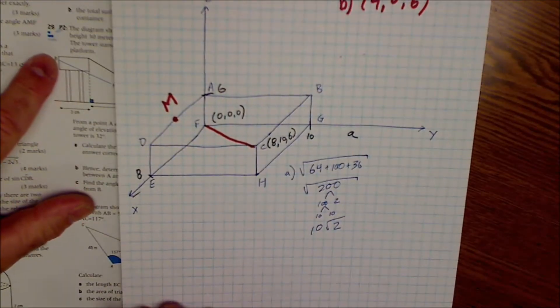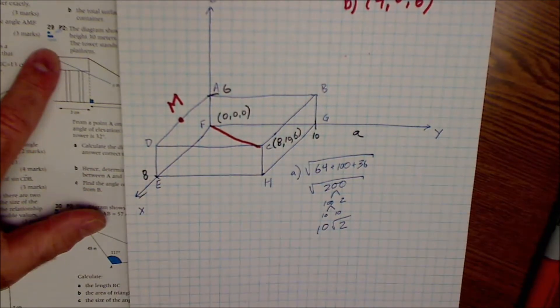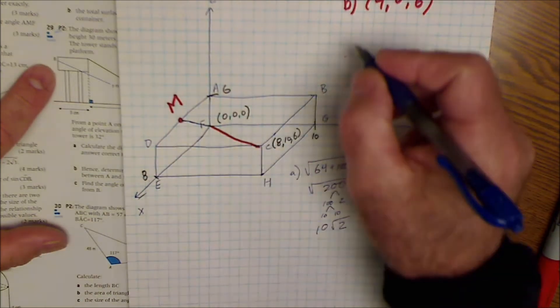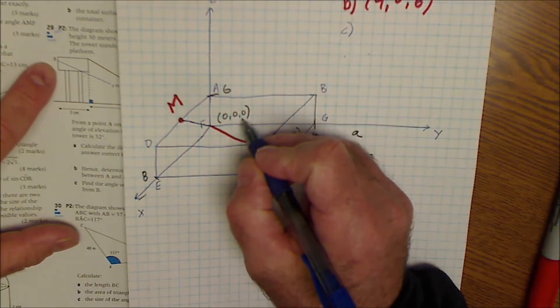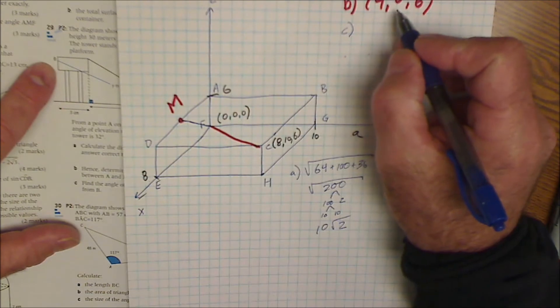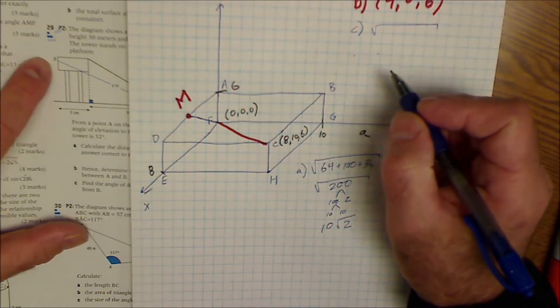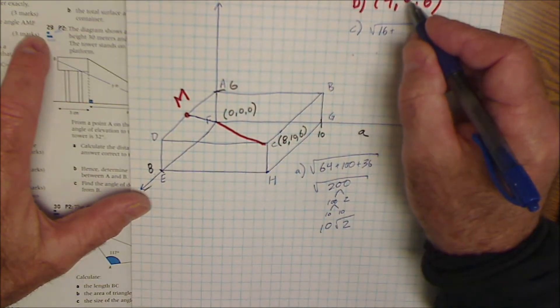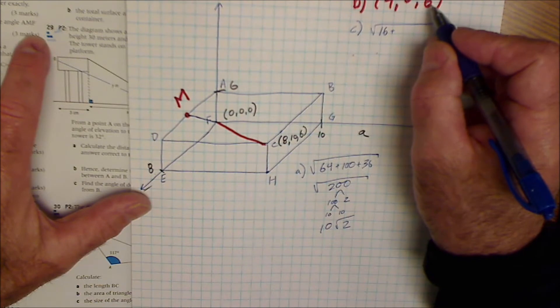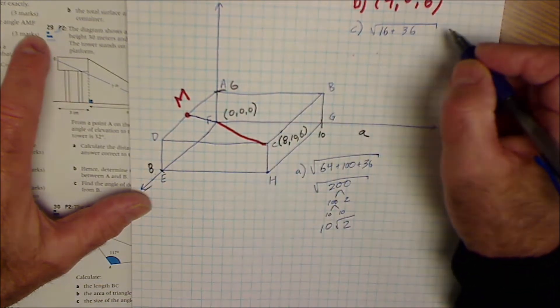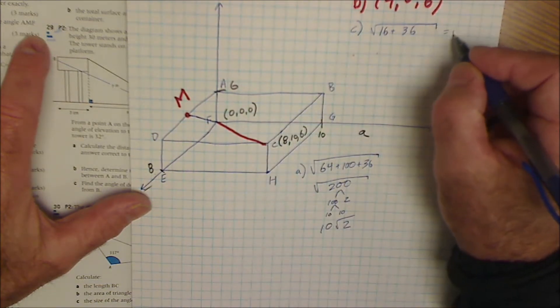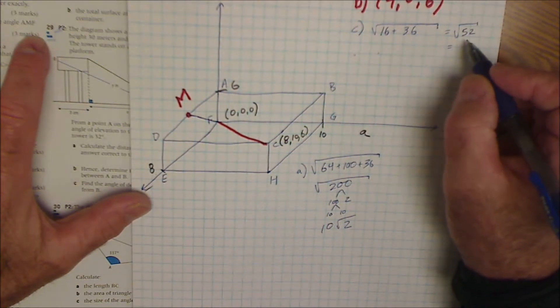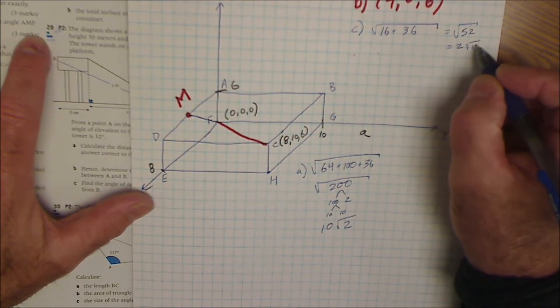Part C, find the distance between the point F and M. So find this distance here between the coordinate 0, 0, 0 and the coordinate 4, 0, 6. Again, that's a three-dimensional Pythagorean theorem. 4 minus 0 squared, plus 0 minus 0 squared, plus 6 minus 0 squared. So it's equal to the square root of 52. And I think the square root of 52 is a 4 and a 13, or 2 root 13.